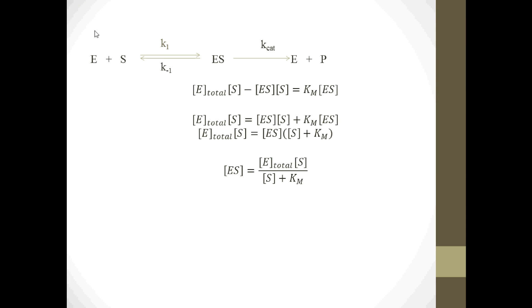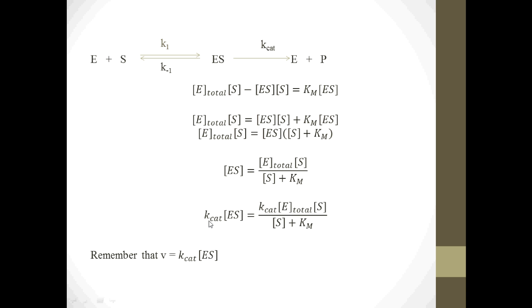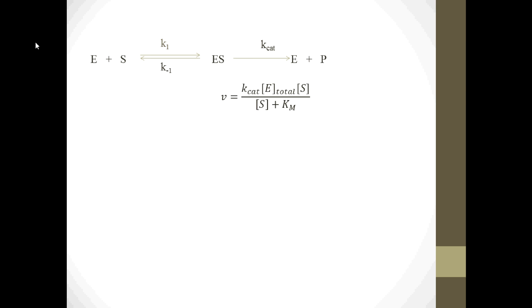Now I want to incorporate reaction velocities. Remembering that V equals Kcat times ES, I multiply both sides of the ES equation by Kcat. On the left I get Kcat times ES, and on the right I get Kcat times E_total times S divided by (S plus Km). Since Kcat times ES equals V, I substitute on the left side. So V equals Kcat times E_total times S, all divided by S plus Km.